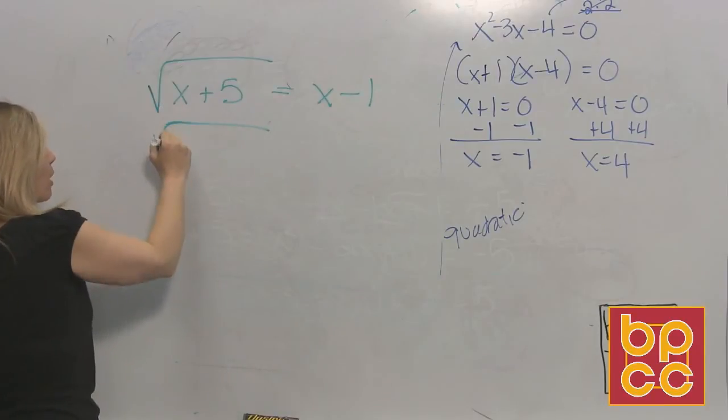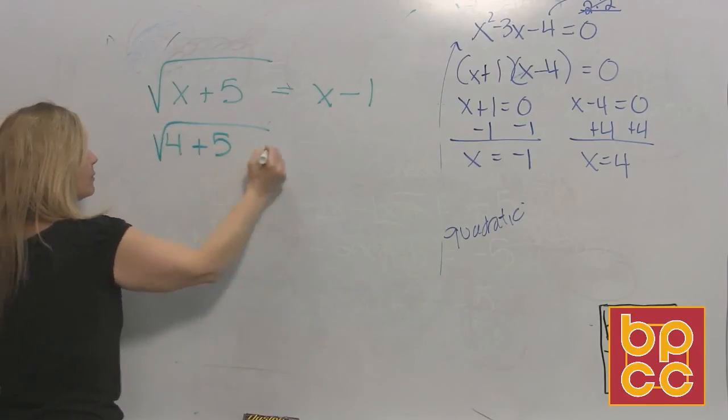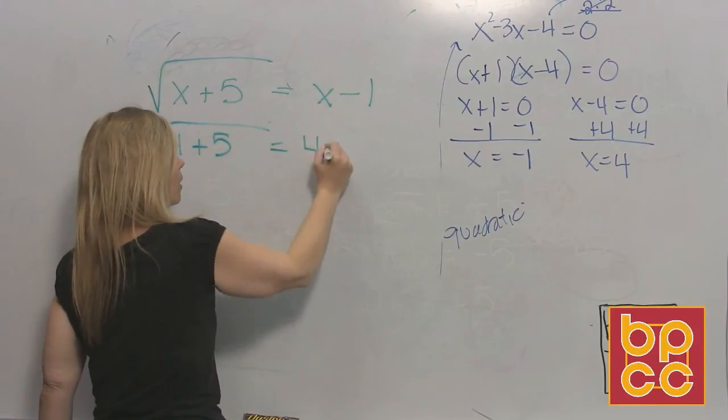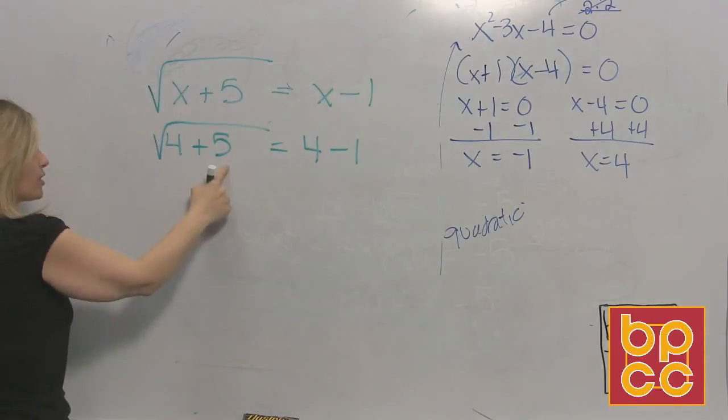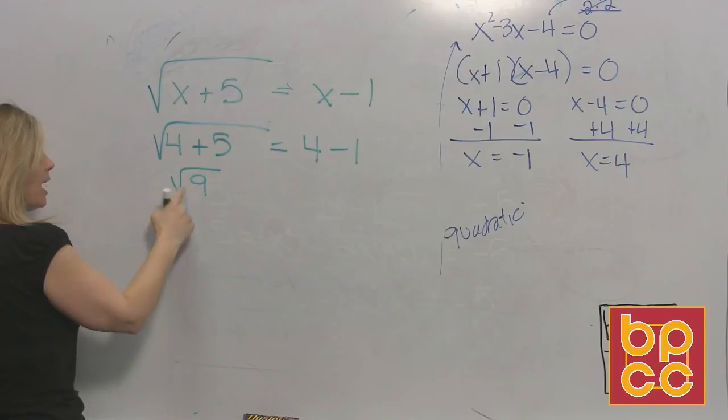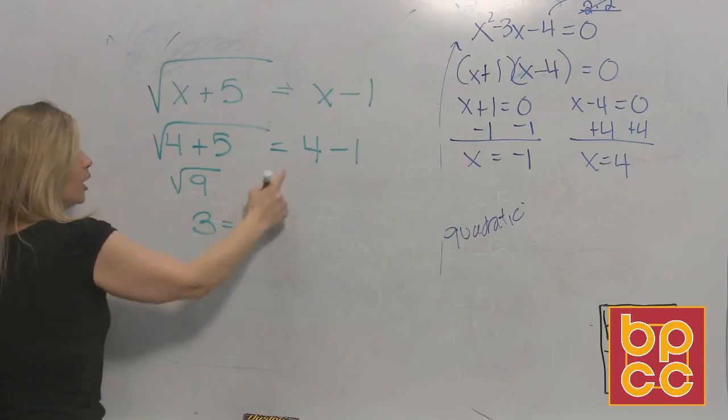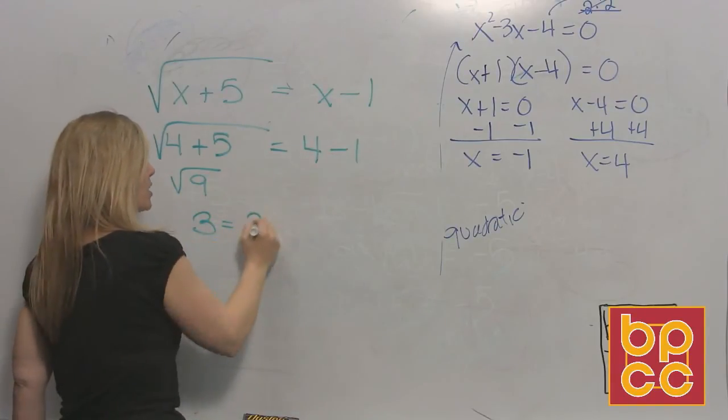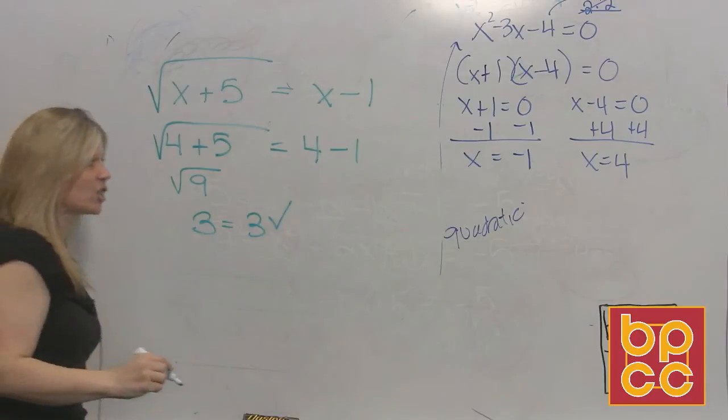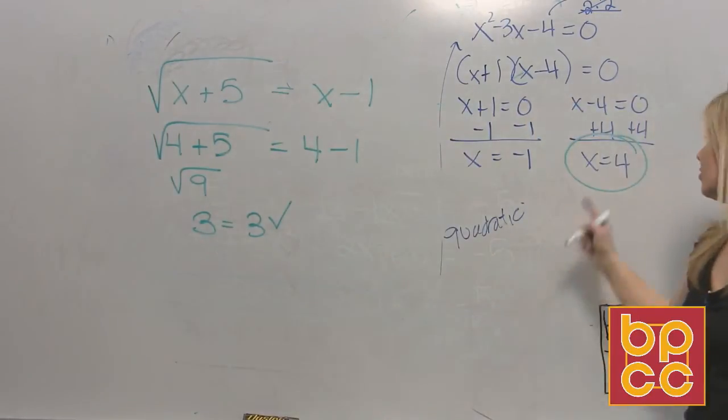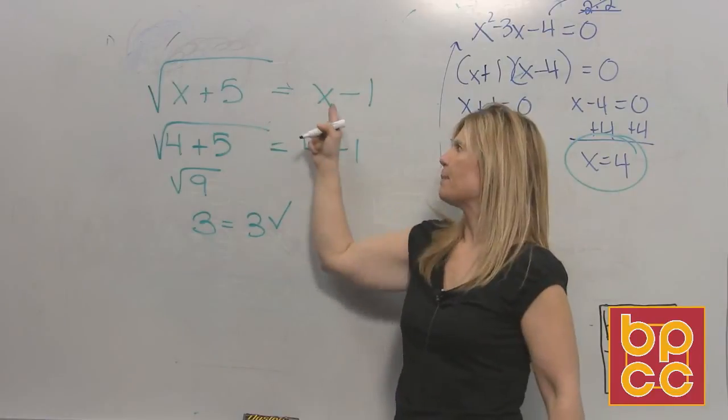So where there's an x, I'm going to put four. Four plus five. Where there's an x, I'm going to put a four. We're going to work this out. We know we got to add what's in the root. That gives us nine. And the square root of nine is three. We're going to work at the right side. Four minus one is three. Hey, that checks. This works. This is an answer. That's the number that makes both sides balance.